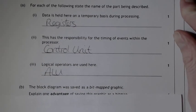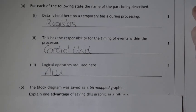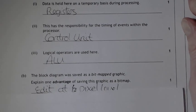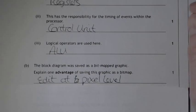Next question talks about the block diagram being saved as a bitmap. Explain one advantage of saving it as a bitmap. Okay, a bitmap - when you zoom into a bitmap,